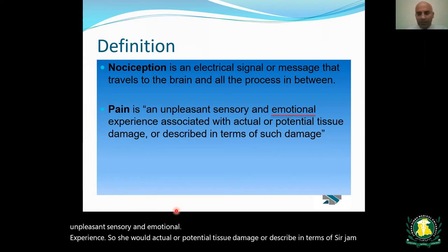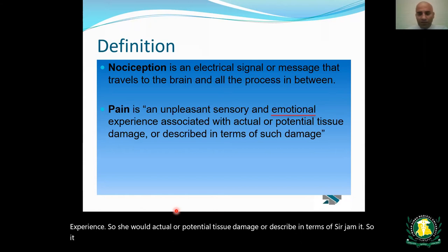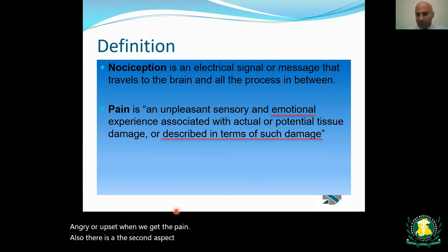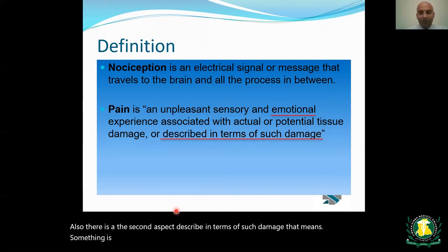Pain has an emotional aspect — we get angry or upset when we feel pain. There is also a second aspect: pain is described in terms of such damage, meaning something bad is perceived as going on even if there is no actual damage occurring — we still feel the pain.